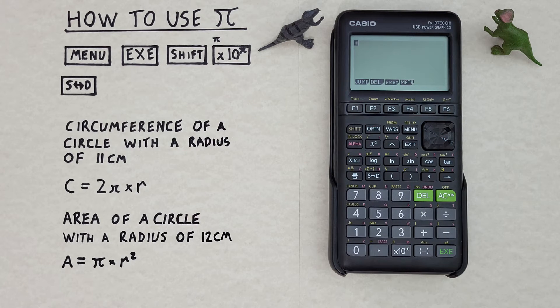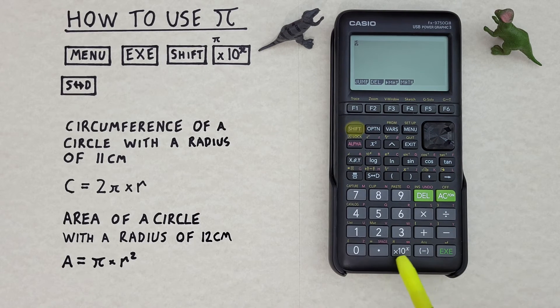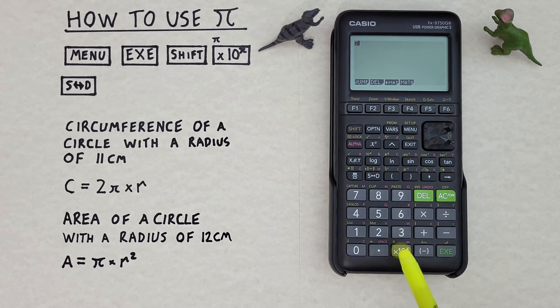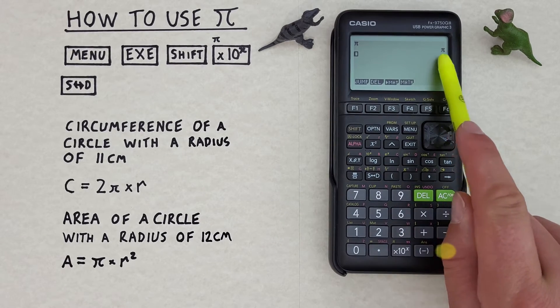If we just want to get Pi, what we do is press shift and then the times 10 to the x key with the shift function of Pi. And then if we hit the execute key, there we go, we get the Pi symbol.